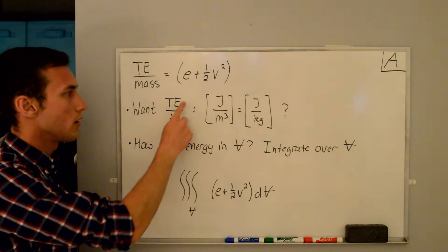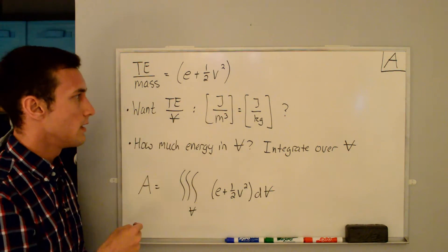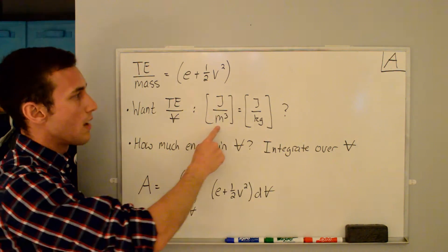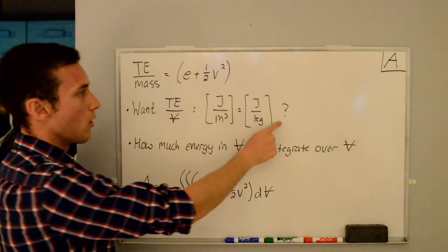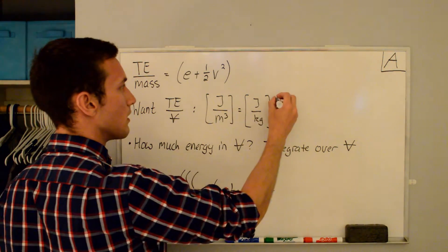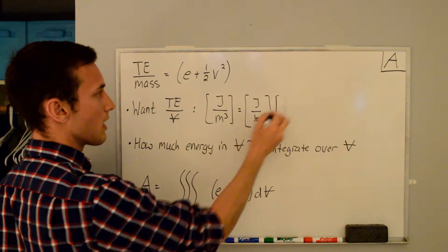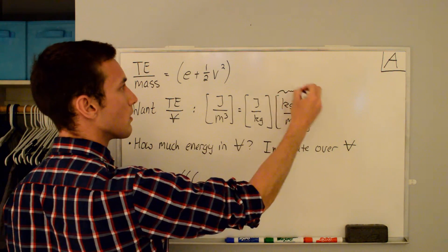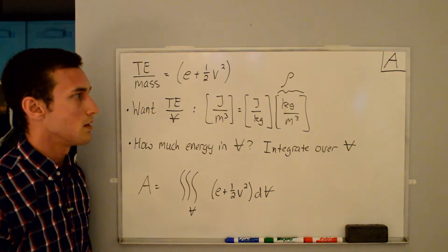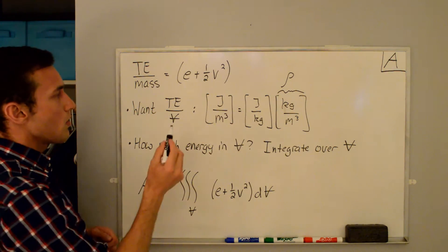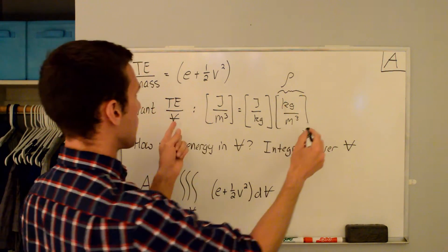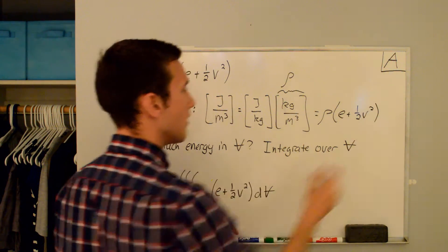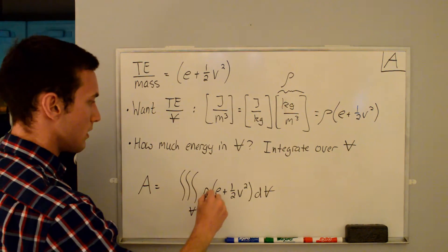We actually want the total energy per unit volume [J/m³]. We have joules per kilogram from the total energy per unit mass, so what do we need? We need kilograms per meter cubed to cancel correctly — and that term is just the density, rho [kg/m³]. So the total energy per unit volume is rho times (e + ½v²).